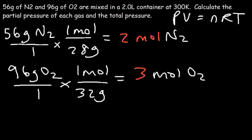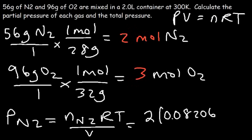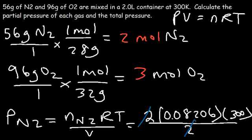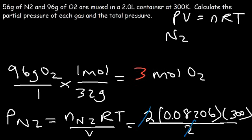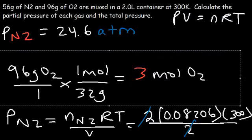Using PV equals NRT, P equals NRT over V. The partial pressure of N2 is the moles of N2 times R times T divided by V: 2 moles times 0.08206 times 300 Kelvin divided by 2 liters. The 2s cancel, leaving 0.08206 times 300, which equals 24.6 atm. That's the partial pressure of nitrogen gas.